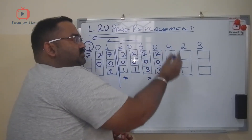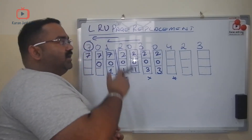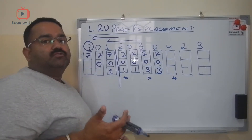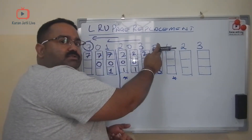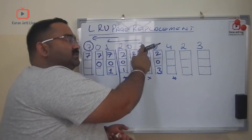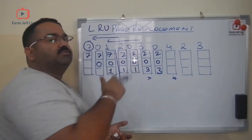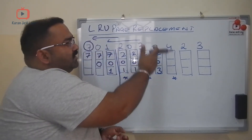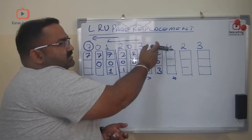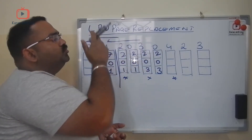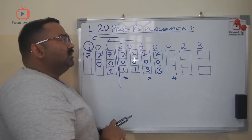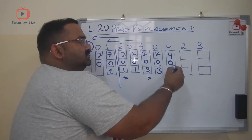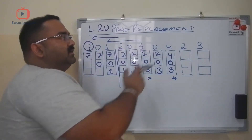Page 0 is already in the cache — no replacement. Now comes page 4. Looking at pages 2, 0, and 3: page 0 was used just recently, page 3 before that, and page 2 is the page not used for the longest period of time. So I replace page 2 with page 4. Cache becomes: 0, 3, 4.